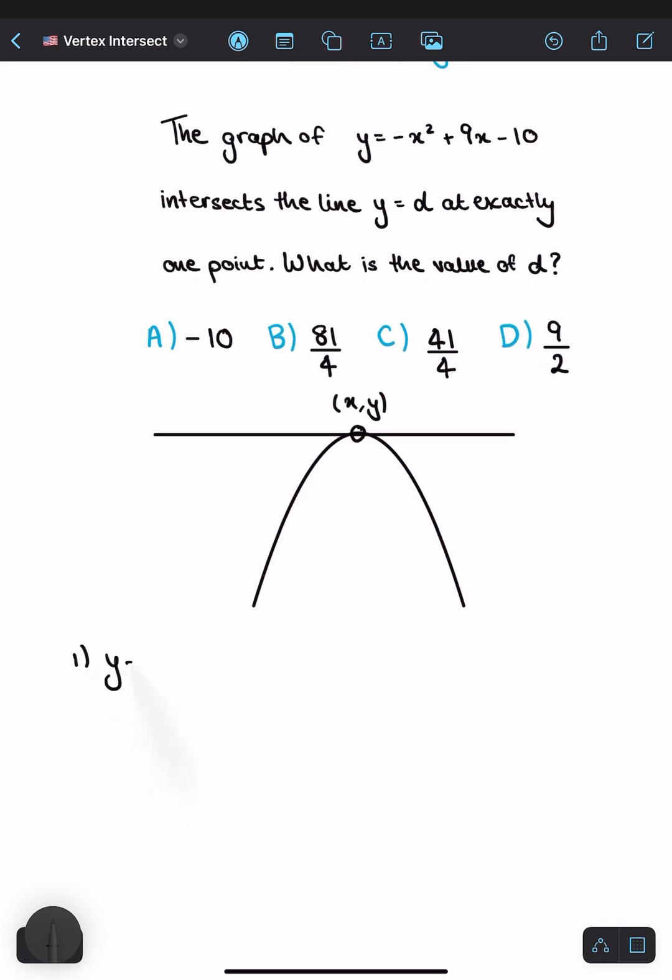We have y = -x² + 9x - 10. I'll factor out the negative sign to make it easier: -(x² - 9x + 10).